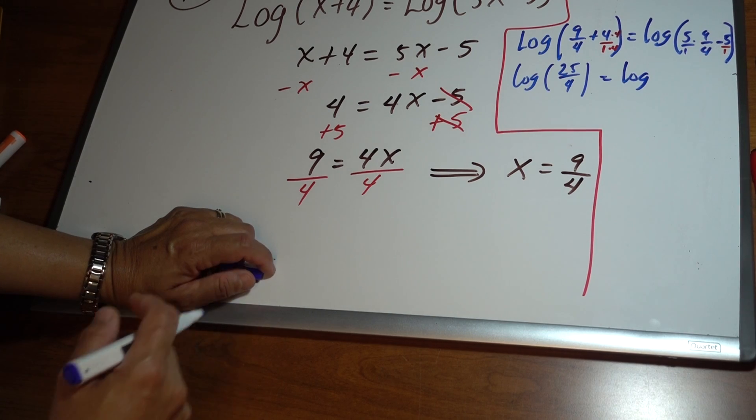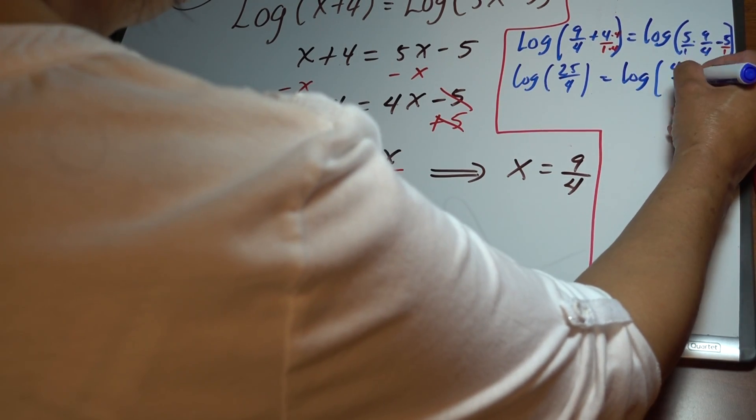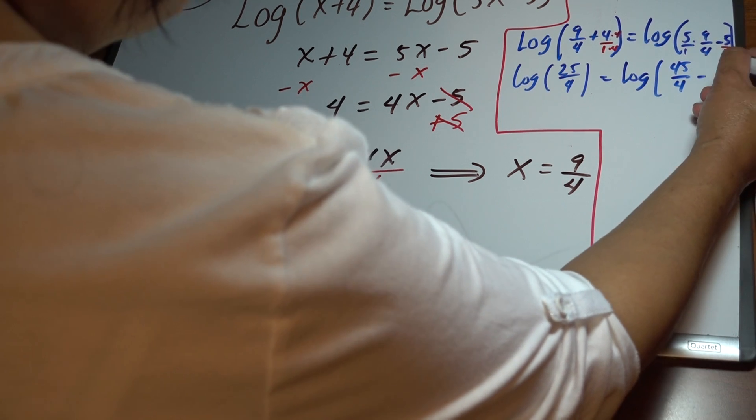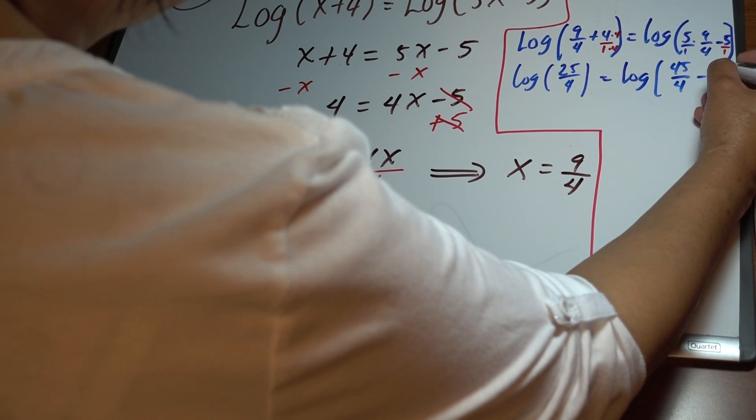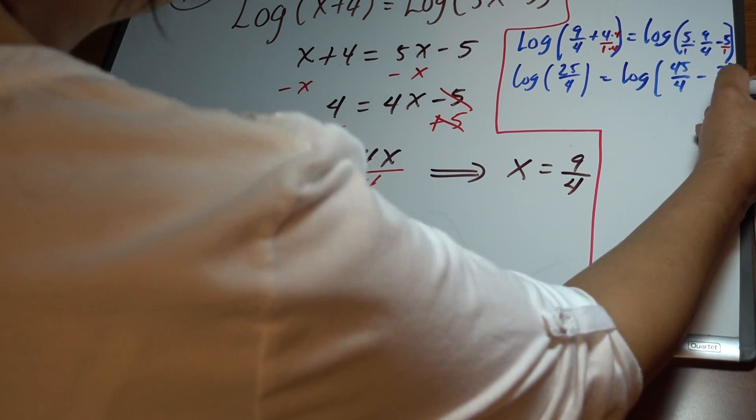45 fourths minus 5 over 1. I'm going to write 5 times 4 as 20 fourths to have the same denominator.